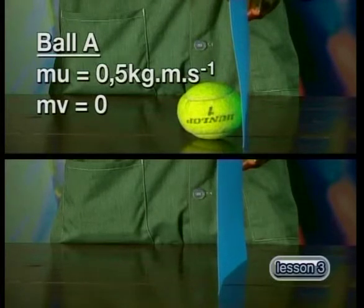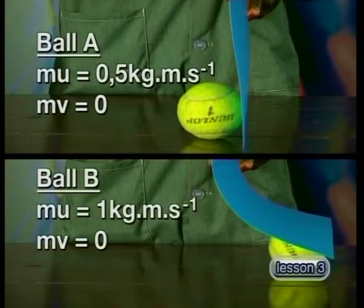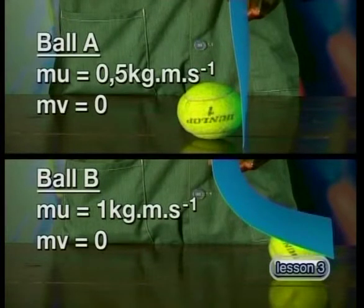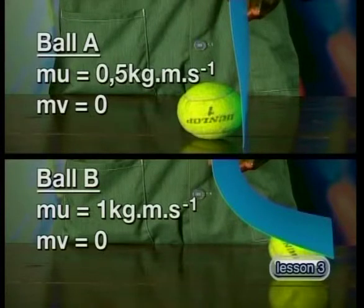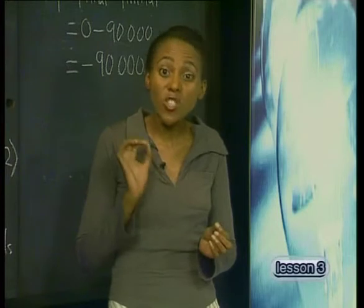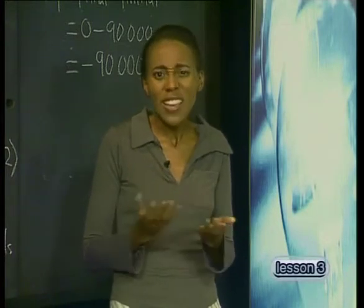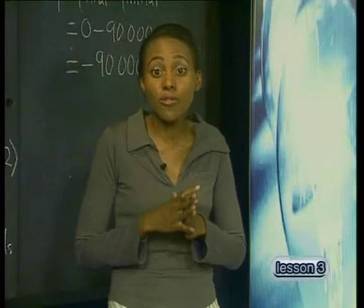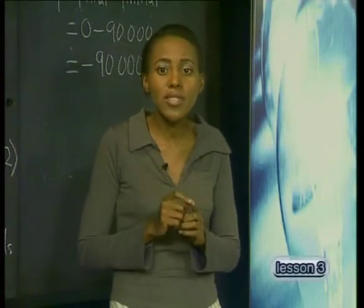and the faster ball, B, had an initial momentum of 1 kilogram meters per second, and both balls had a final velocity of zero, then the change in momentum for ball A is smaller than the change in momentum of ball B. But the resultant force acting on both balls was the same — we used exactly the same piece of cardboard. This must mean that change in momentum is not only dependent on the magnitude of the force.